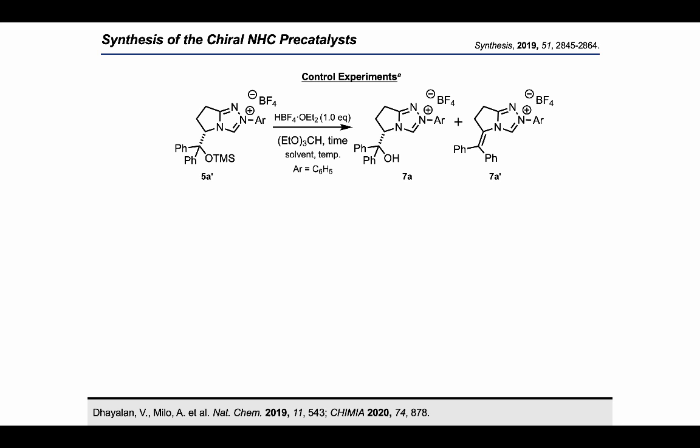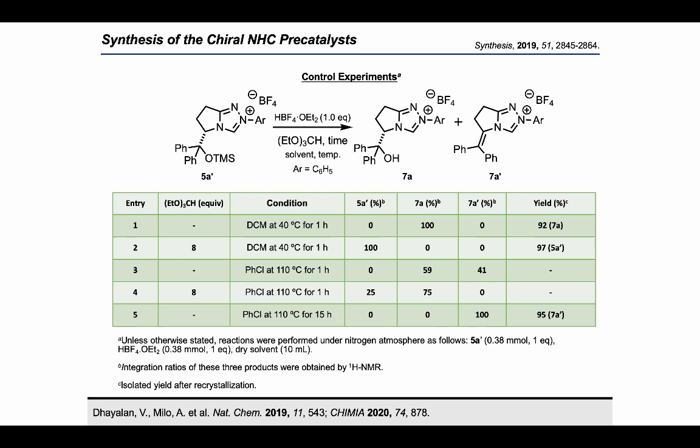We performed control experiments to understand this reaction. Using an OTMS catalyst as a model substrate in the presence of HBF4 etherate: Entry 1 — without triethyl orthoformate, DCM, 40°C, 1 hour — gave 100% of catalyst 7A. Entry 2 — 80% triethyl orthoformate, DCM, 40°C, 2 hours — gave 100% recovered starting material. Entry 3 — without triethyl orthoformate, chlorobenzene, 110°C, 1 hour — gave 39% of catalyst 7A. Entry 4 — without triethyl orthoformate, chlorobenzene, 120°C, 1 hour — gave 25% starting material and 75% OH catalyst. Entry 5 — without triethyl orthoformate, chlorobenzene, 120°C, 15 hours — gave 100% of catalyst 7A'.